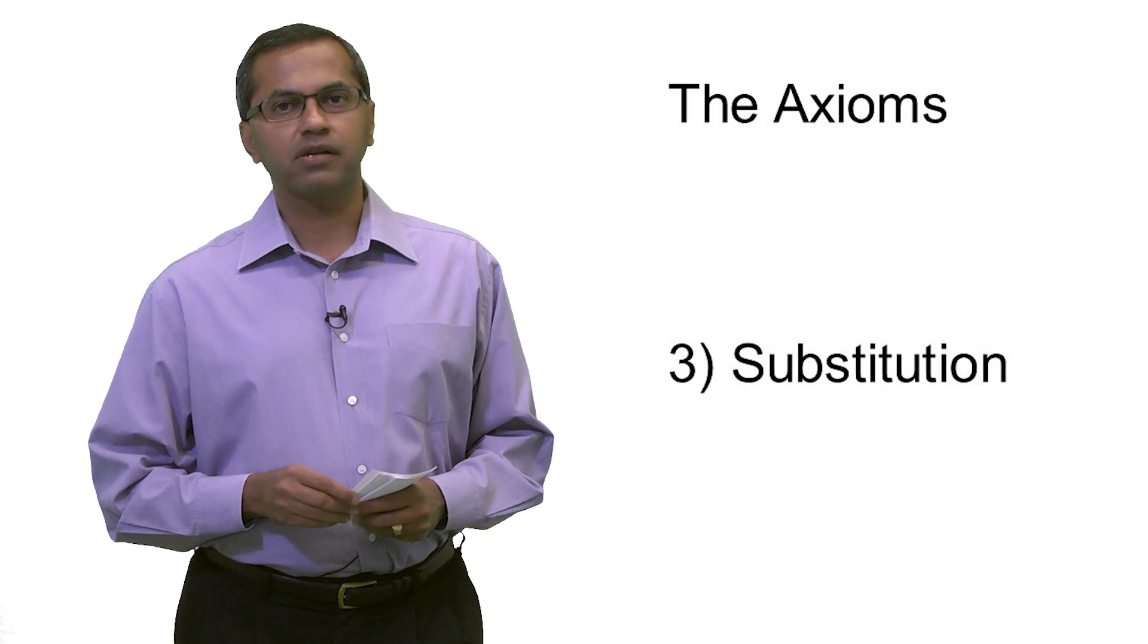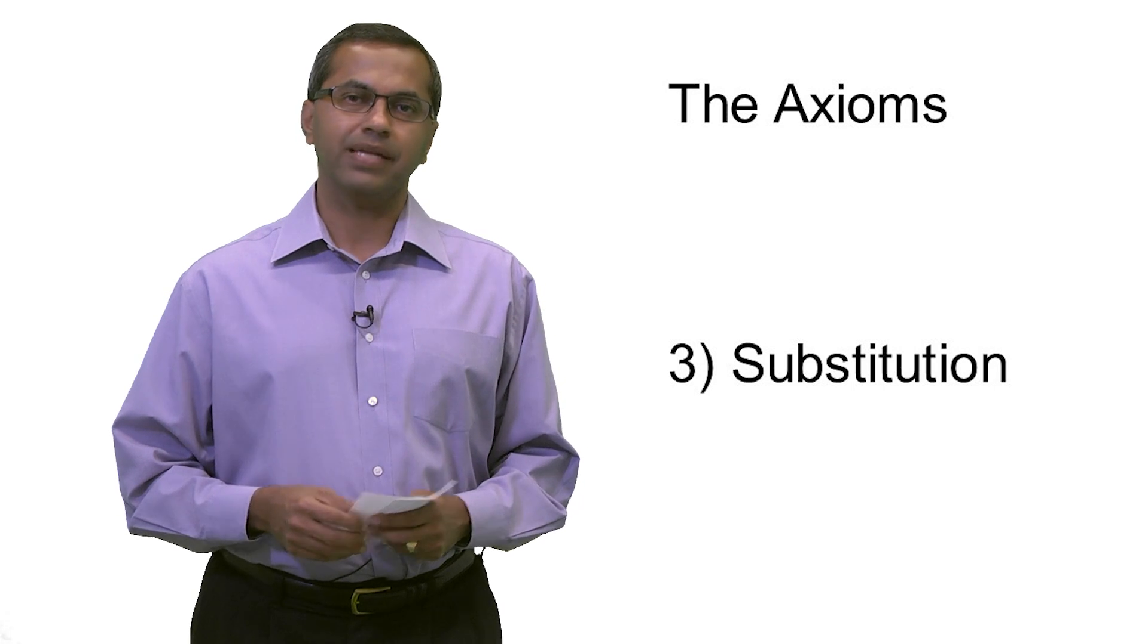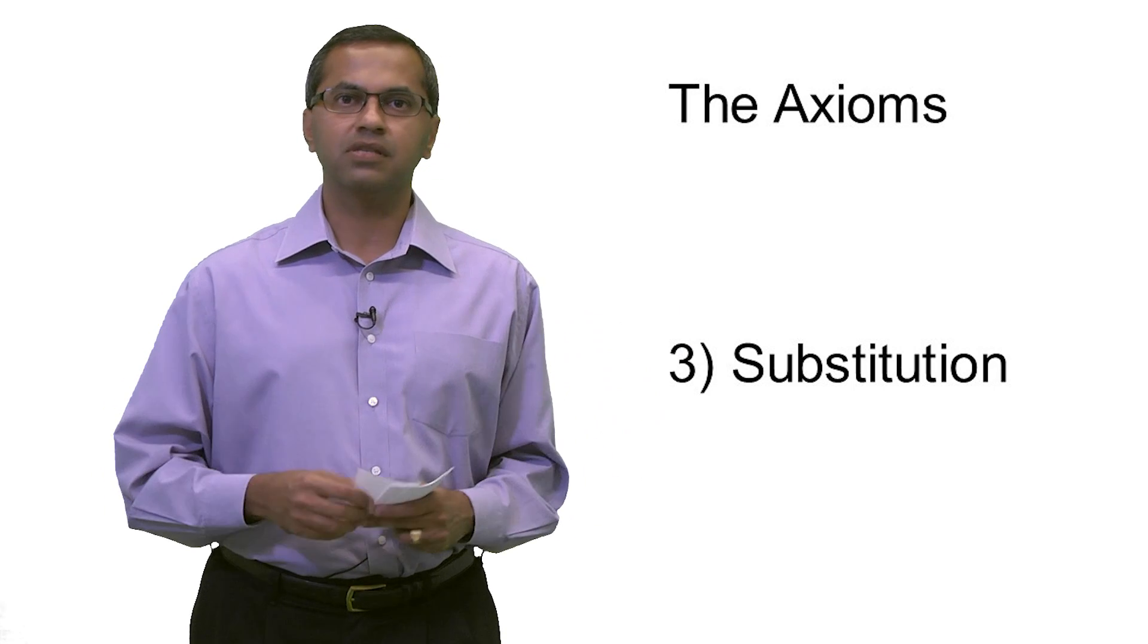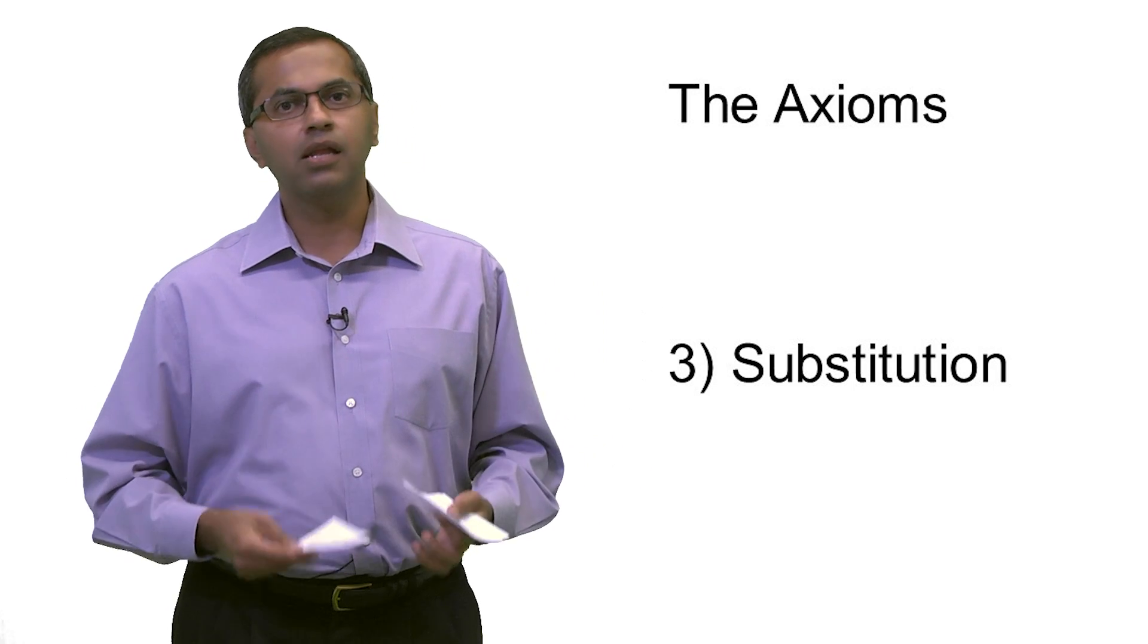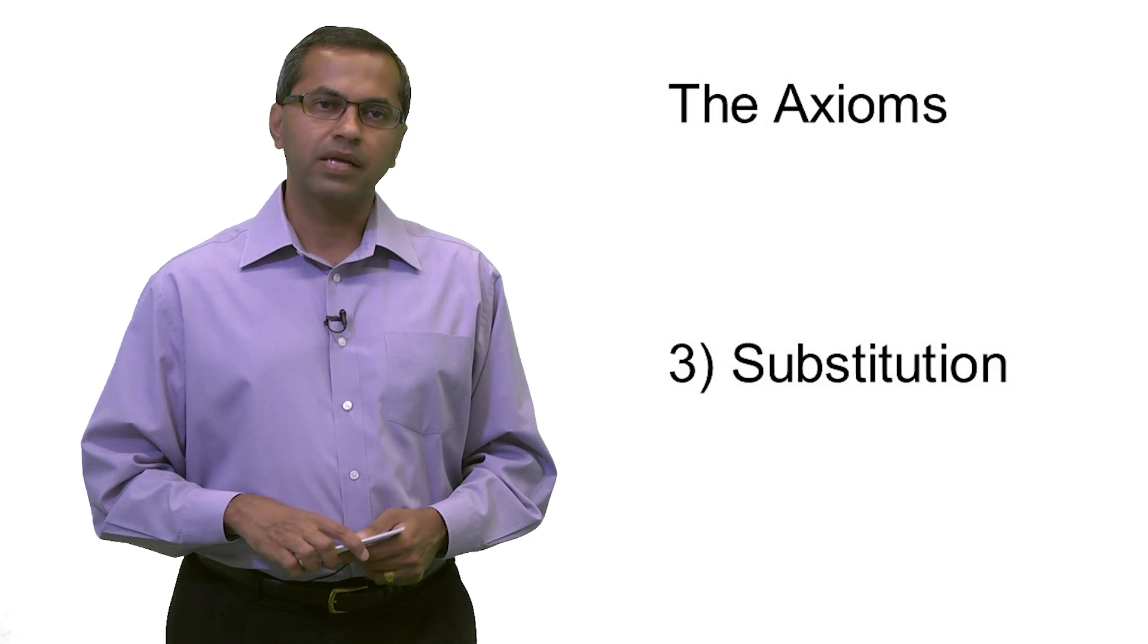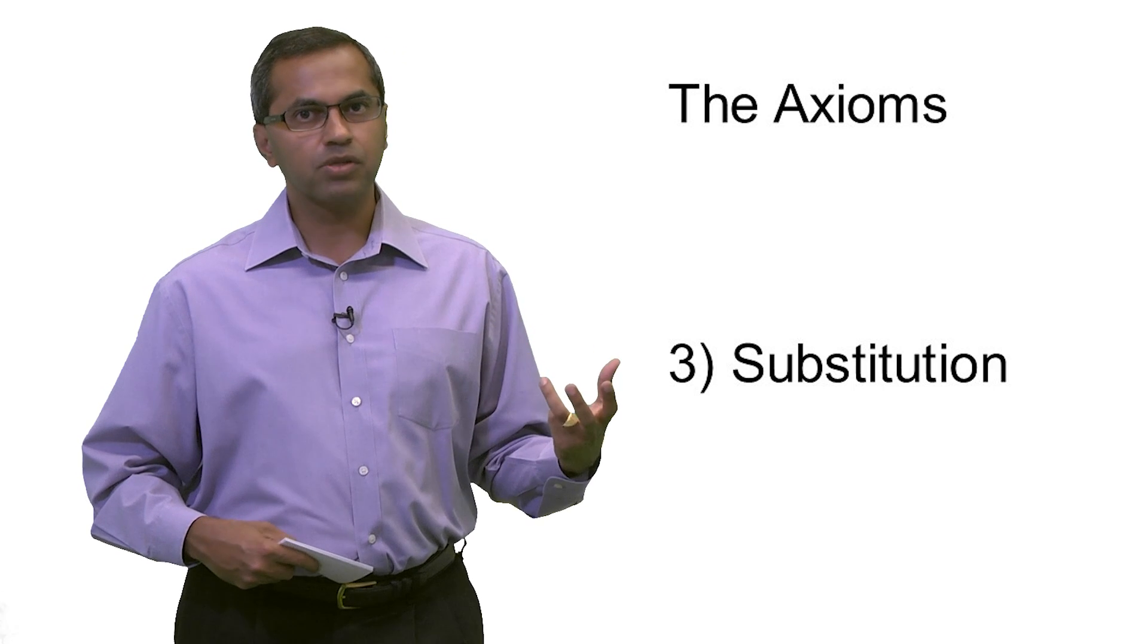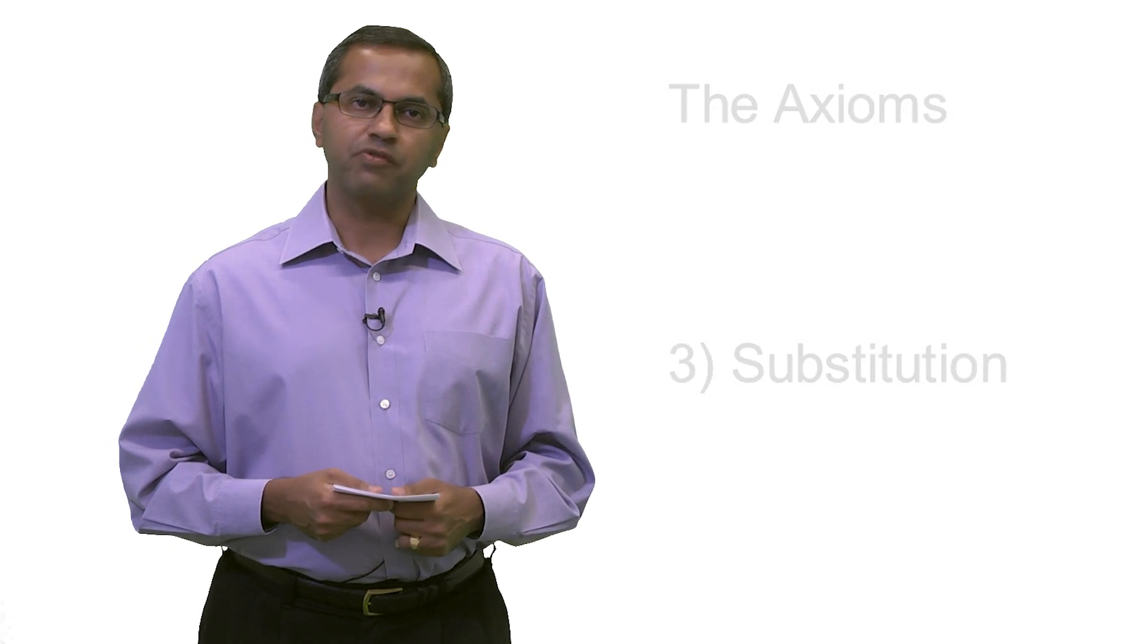Now, one corollary of this particular axiom is something called the cancellation principle. And cancellation says that if I've got two options and I remove something identical from those two options, I should still now have the same preference between those two options as I had before. Now, it turns out again that this principle, the principle of cancellation, is often violated in a lot of decisions that we make. And perhaps the most famous demonstration of the violation of this principle was done by Maurice Allais in something that is known as the Allais paradox.